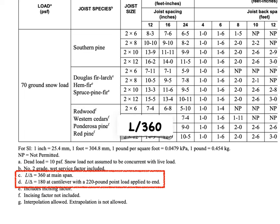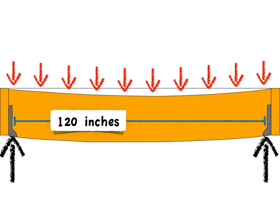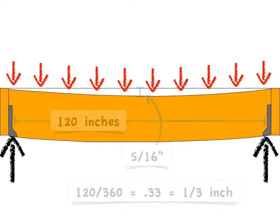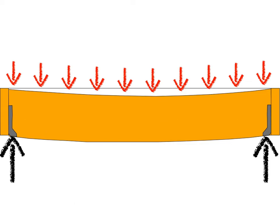You can also see the conditions used for cantilevered portions. For a 10-foot span, that's 120 inches divided by 360, giving us a third of an inch — or rounding down slightly, about five-sixteenths of an inch of allowable deflection on a 10-foot joist span. Any more deflection from an over-spanned joist is our first failure, so to speak.